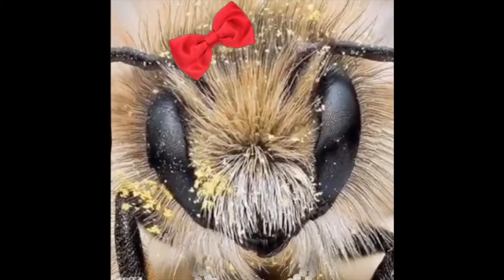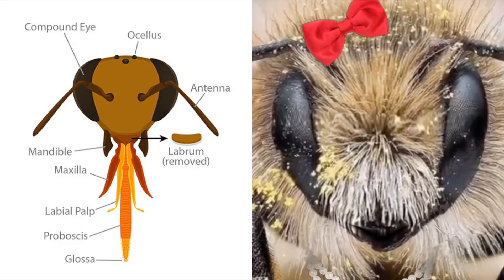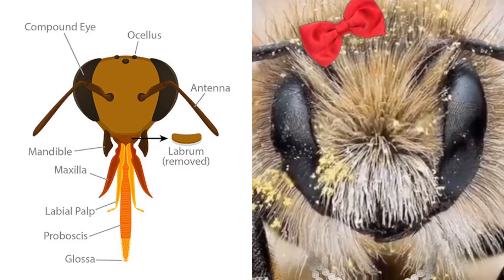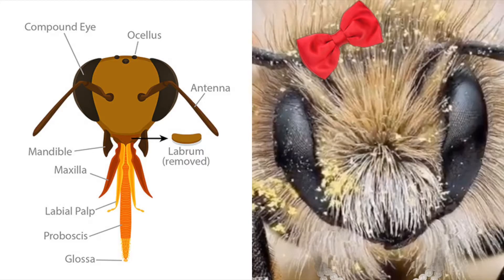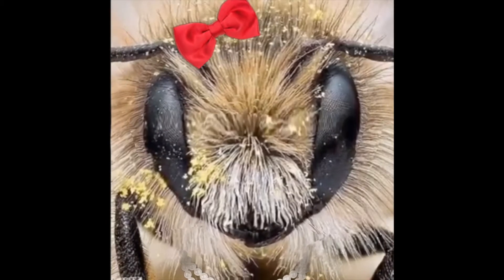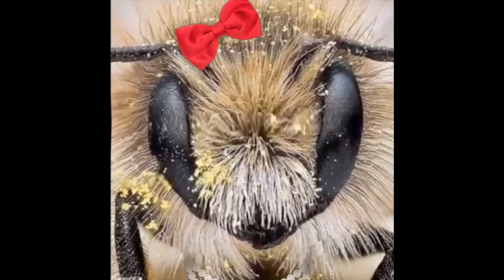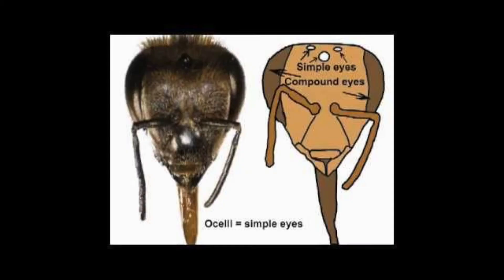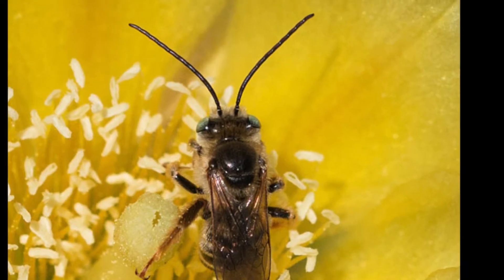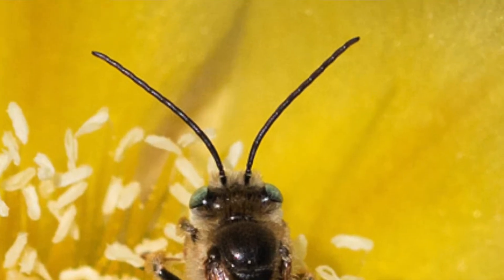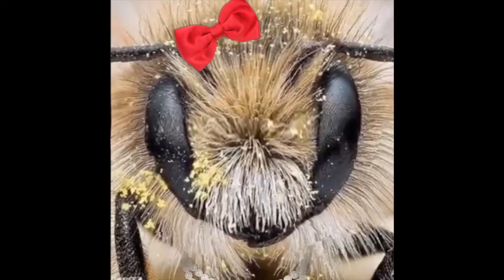The head of the honeybee contains our eyes, antenna, and feeding structures. We have two kinds of eyes — compound eyes and simple eyes. Our antenna helps us to smell, and we also use it to help us measure flight speed.